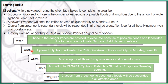What: A powerful typhoon will enter the Philippine area of responsibility on Monday, June 15. Where: Alert is up for all those living near rivers and coastal areas. When: According to PAGASA, Typhoon Pablo is signal number two, Tuesday evening. Why and how: Classes from preschool to secondary levels will be suspended in all affected areas.